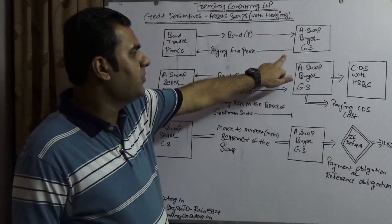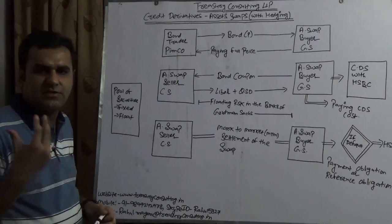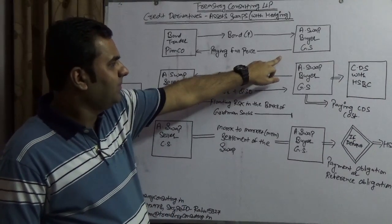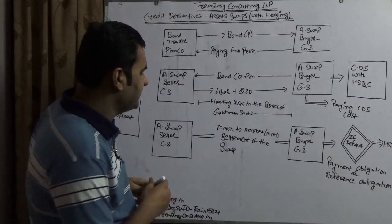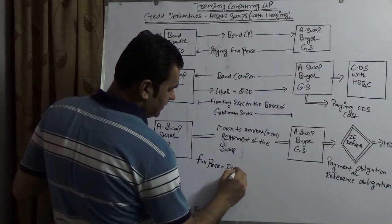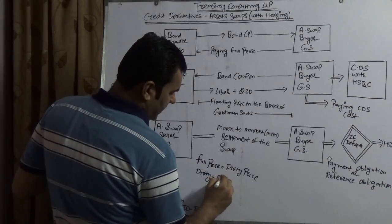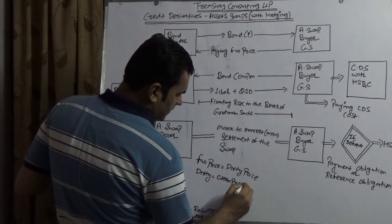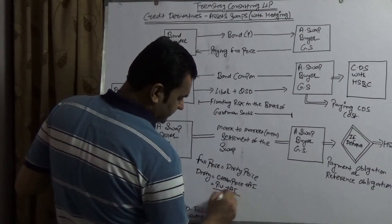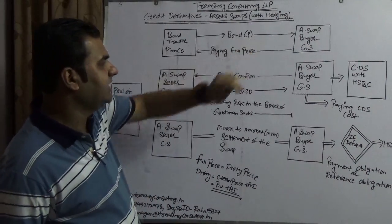Here you have asset swap buyer Goldman Sachs who is buying a bond from bond trader Pimco. Pimco is the largest bond trading firm across the globe, founded by Mr. Bill Gross. Asset swap buyer Goldman Sachs is paying full price. Full price also equals dirty price, and dirty price equals clean price plus accrued interest. Clean price is also known as present value plus accrued interest.